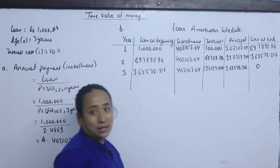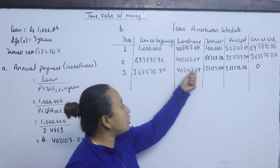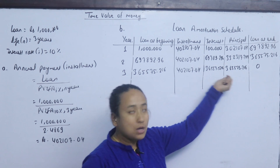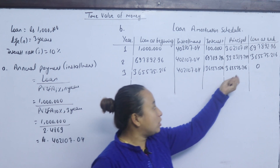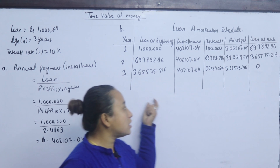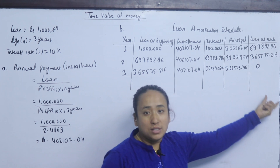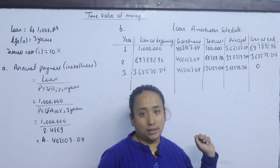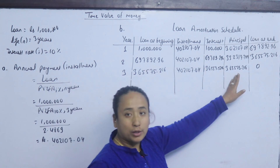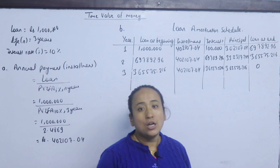The ending balance is exactly 0. Any small discrepancy is due to rounding error. So the ending balance after all three years equals 0, confirming the amortization schedule is complete.